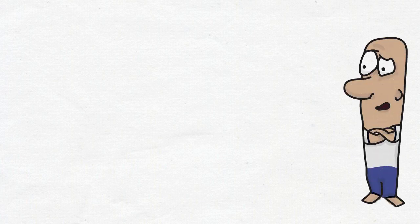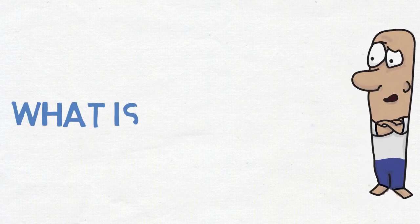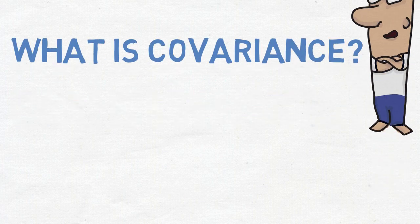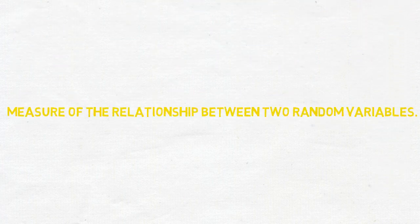So, what is a covariance? In mathematics and statistics, the covariance is a measure of relationship between two random variables.